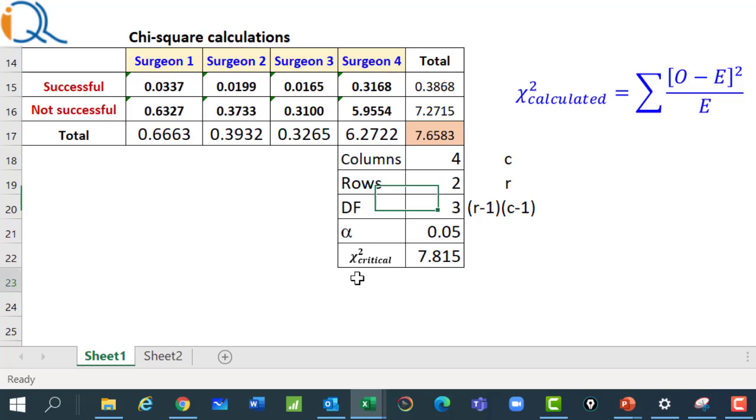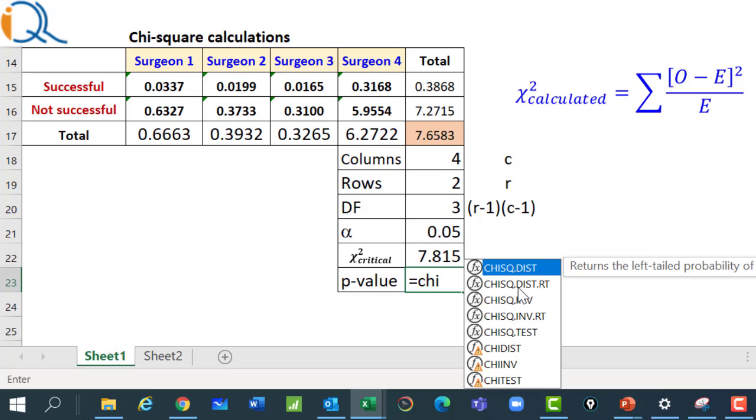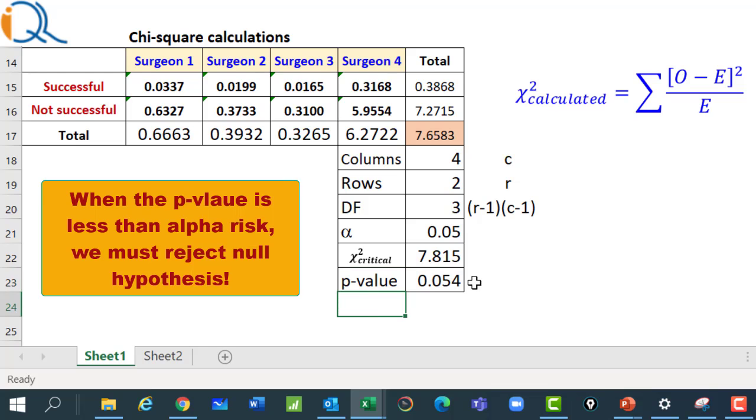Now, I can also calculate the p-value. So, I will just write p-value. Now, how do we calculate the p-value? I will use another excel function that is chi-square distribution right-tail. And this is at the calculated chi-square value 7.65, degrees of freedom again has to be 3. So, this p-value is 0.054.